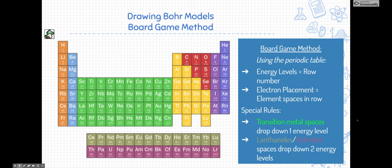But really quickly, the energy levels of an atom, the different rings, are designated by the row number the element is in. The electron placement for each of those rings is determined by each of the element spaces in each of the rows, which we'll show you. There are a few special rules. One is for the transition metals when we get to those green ones. And then finally, the lanthanide and actinides at the bottom. When we reach those spaces, there's a few rules such as dropping down one energy or dropping down two. And I'll show you an example of that in a minute.